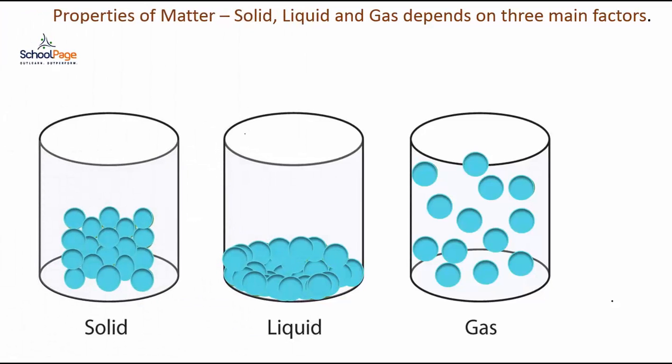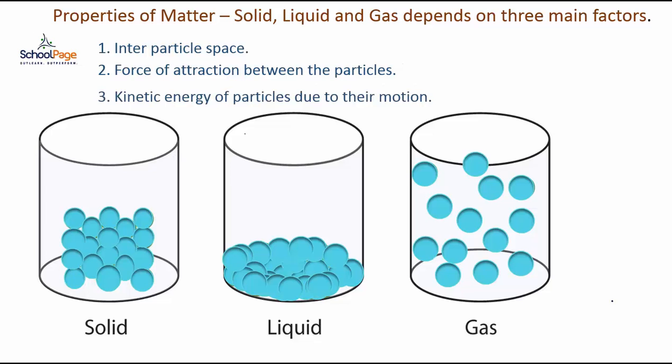Properties of solids, liquids and gases depend on three main factors. That is interparticle space, force of attraction between the particles and kinetic energy of particles due to their motion.